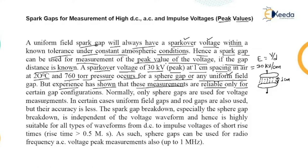Experience has shown that these measurements are reliable only for certain gap configurations. Normally only sphere gaps are used for voltage measurements. In certain cases, uniform field gaps and rod gaps are also used, but their accuracy is less. The spark gap breakdown — which was already discussed in the first chapter — is used here as breakdown.